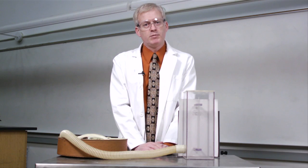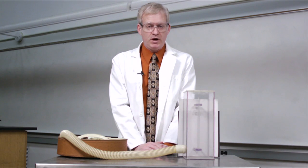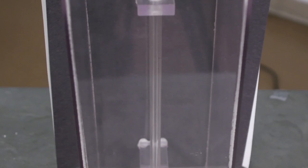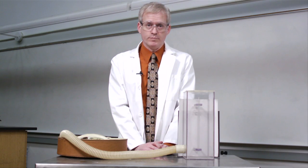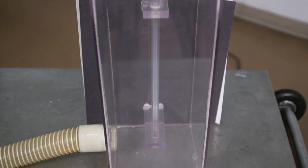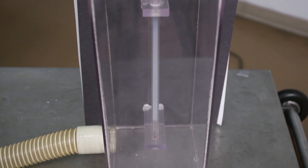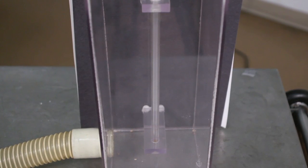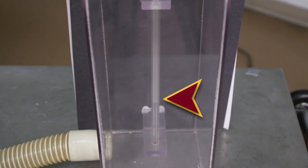An interesting thing about the critical point is that as it is approached from above in temperature, one often observes a phenomenon known as opalescence. The condensation of gas to liquid that occurs everywhere in the tube leads to very small suspended drops that scatter light beautifully until a new liquid phase is formed. So let's watch carefully as the tube cools. Do you see the opalescence beginning? And as it fades, do you see the liquid phase increasing in volume and the meniscus rising up the tube?